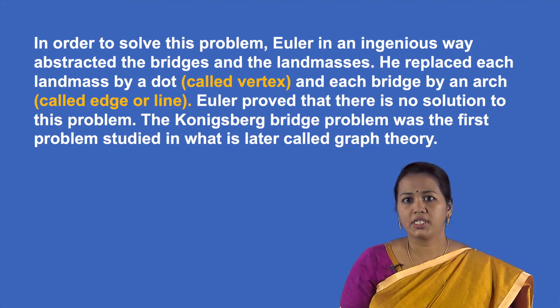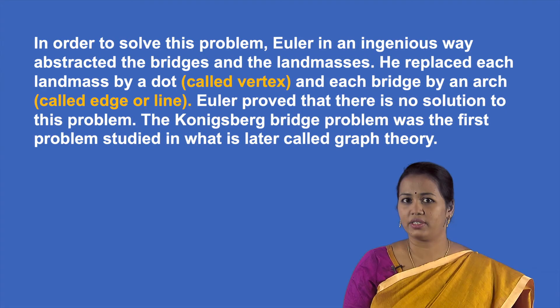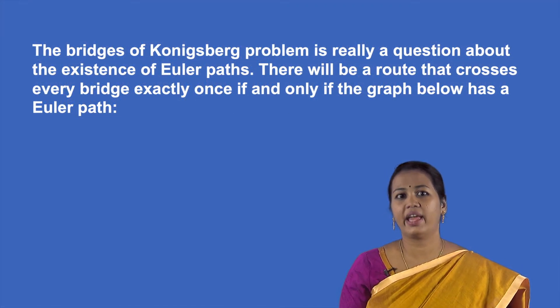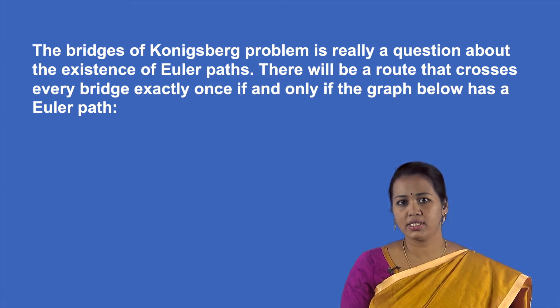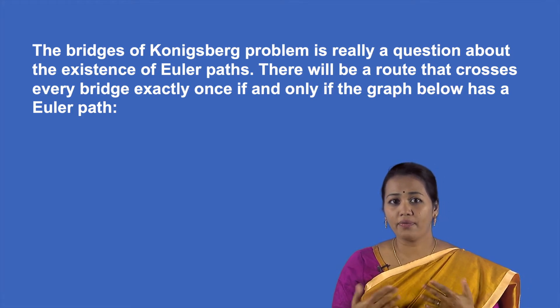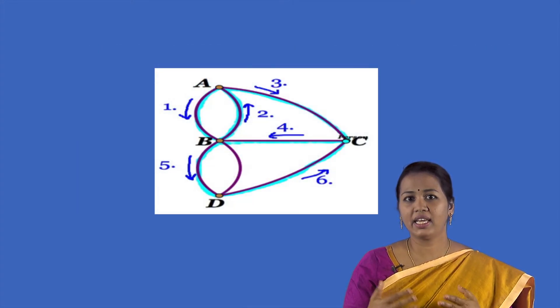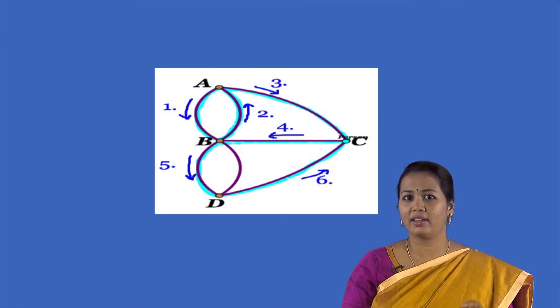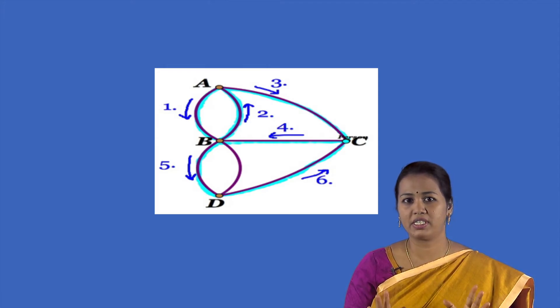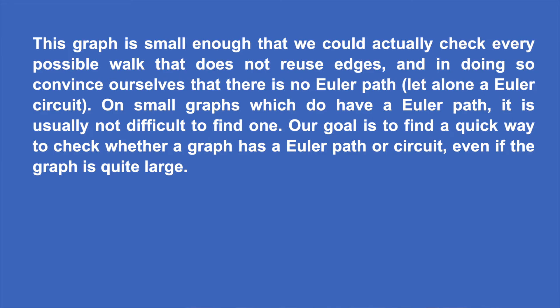On the basis of the above, Euler formulated the general problem: given any configuration of the river and its branches and any number of bridges, determine whether it is possible to cross each bridge exactly once. Euler abstracted the bridges and land masses, replacing each land mass by a dot called a vertex and each bridge by an arc called an edge. Euler proved there is no solution to this problem. The Königsberg bridge problem was the first problem studied in what is later called graph theory.